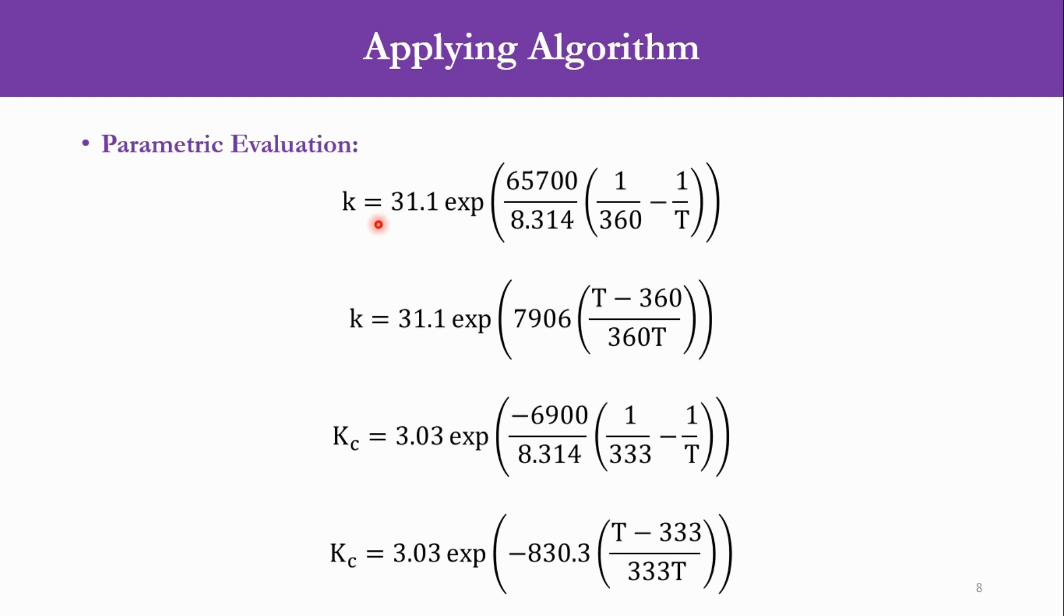Now if we go again to the parametric evaluation for K and Kc, K equals 31.1, which is K0, into exponential -E over RT. Normally we say it like that, but here it is Ea over R times 1 over T1 minus 1 over T. Now we have been given in the initial statement that we were given 31.1 at 360 Kelvin, so we have written 360 over here while T will be calculated from the energy balance equation. And the activation energy value is given over here: 65700 over 8.314. Accordingly it transforms to k equals 31.1 exponential 7906 times T minus 360 over 360 into T.